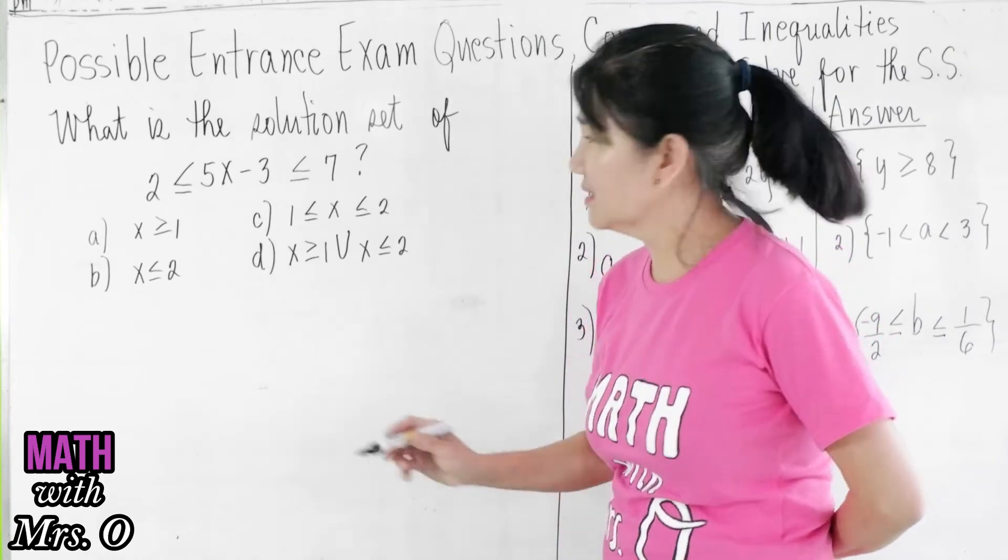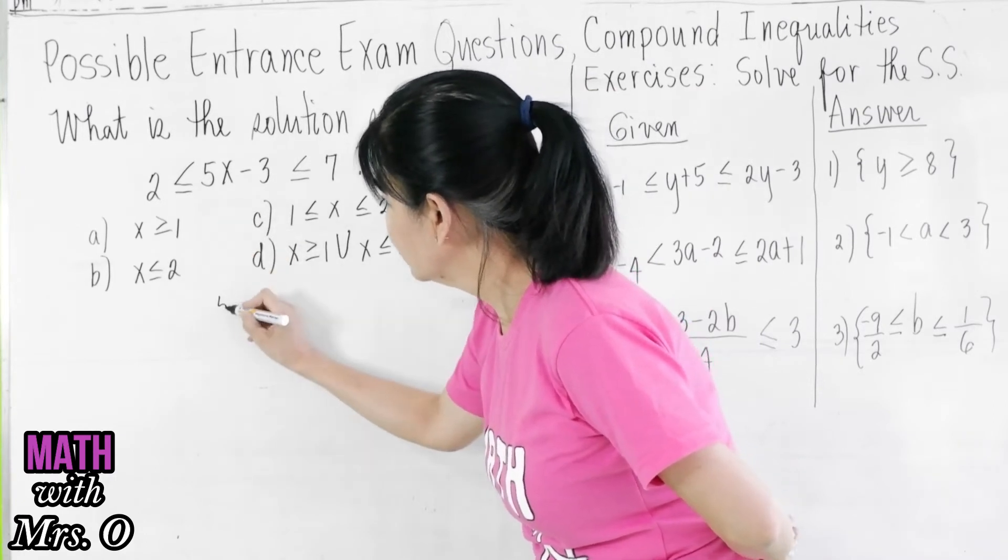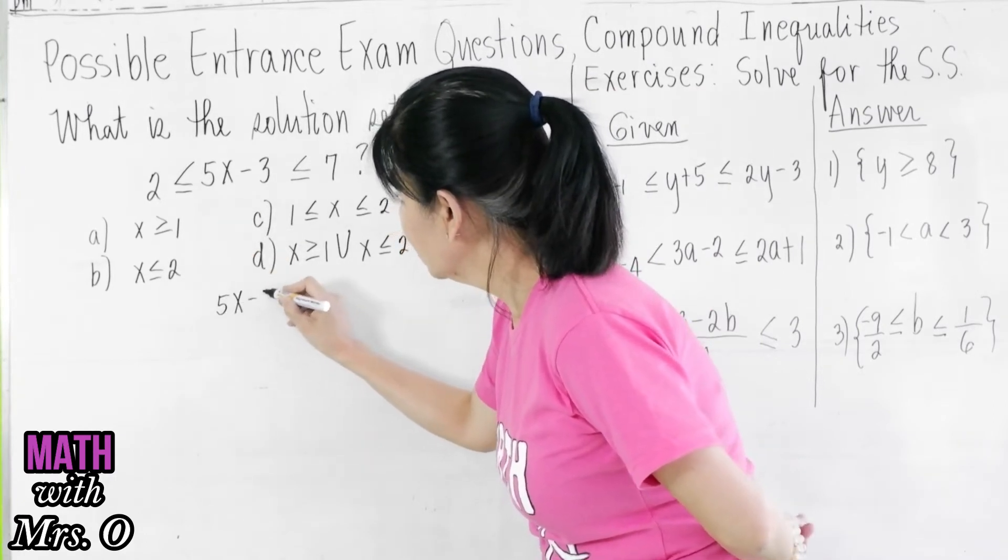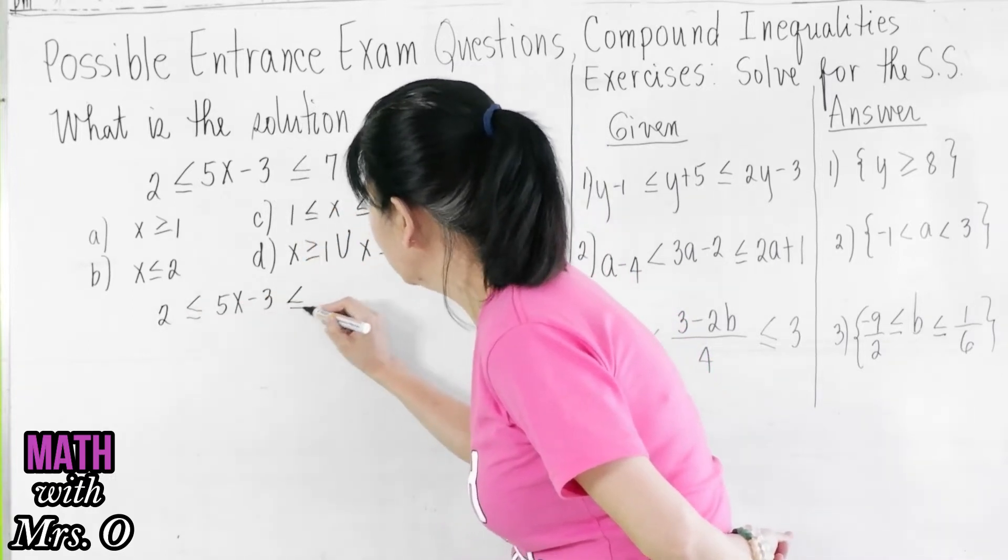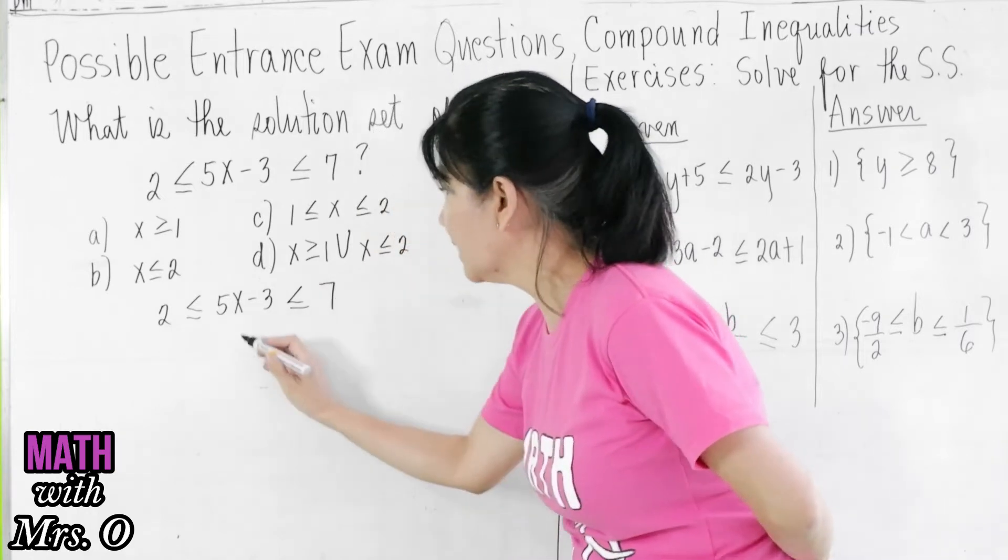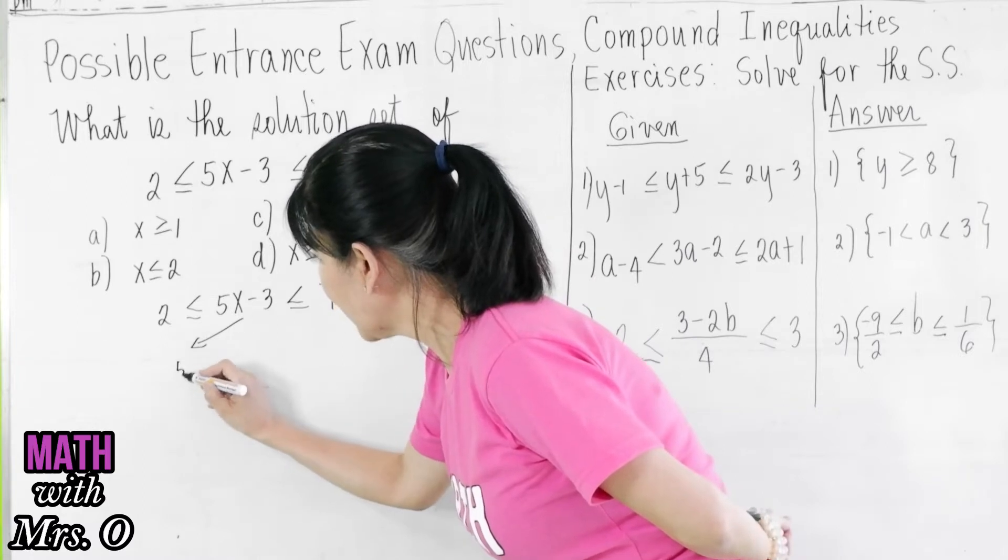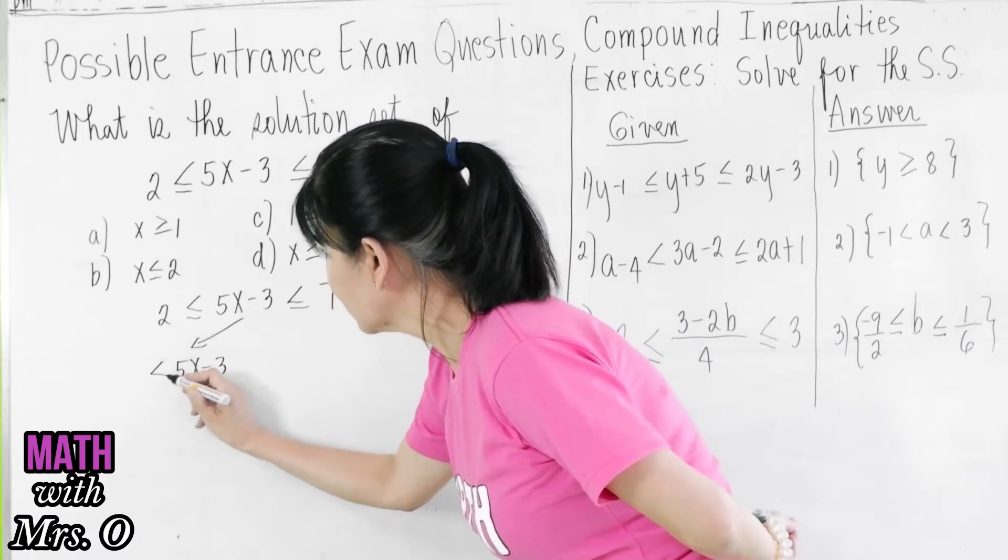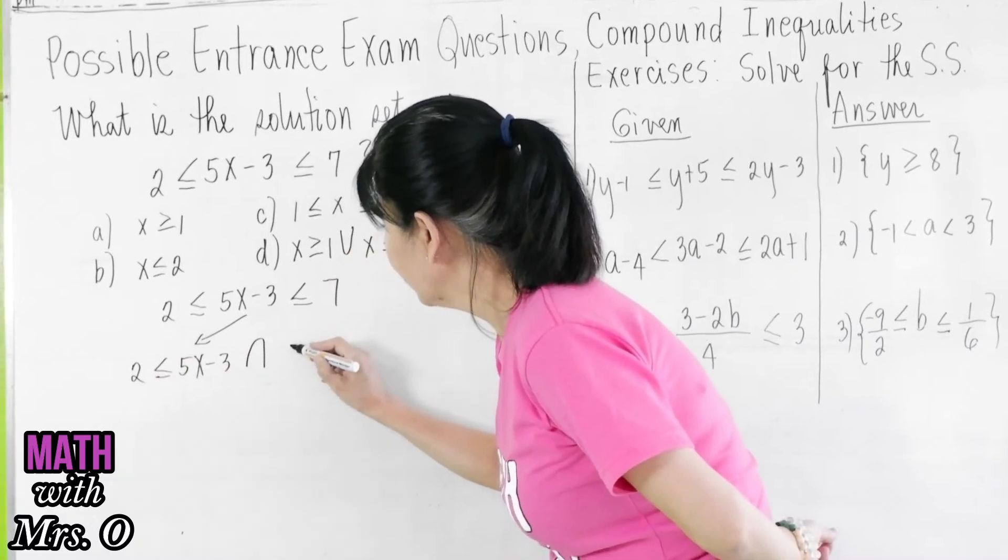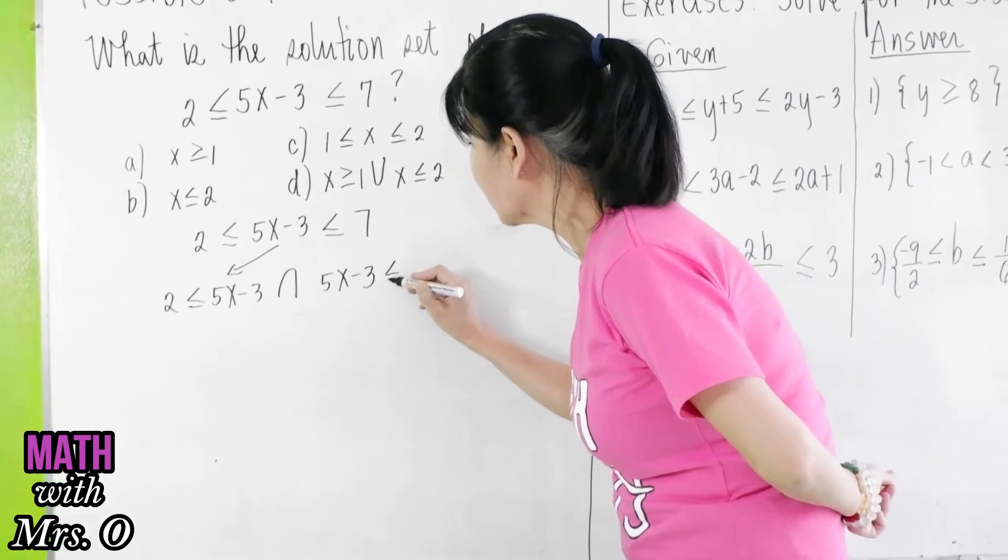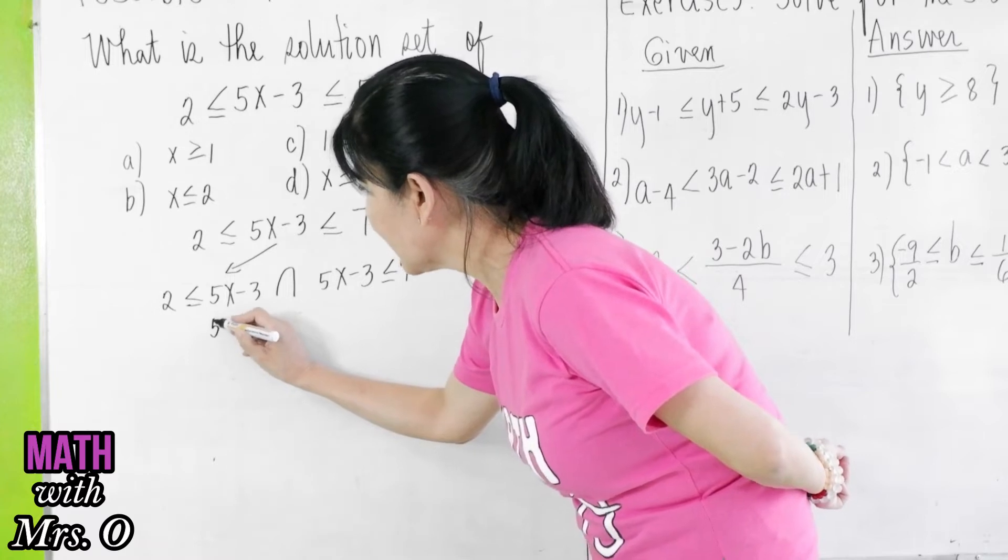How do you solve this? You can separate this into two simple inequalities. One is that 5x minus 3 is greater than or equal to 2, and 5x minus 3 is less than or equal to 7. And then solve for x.